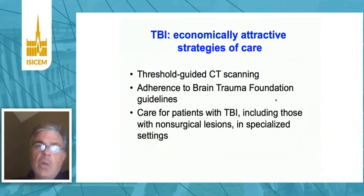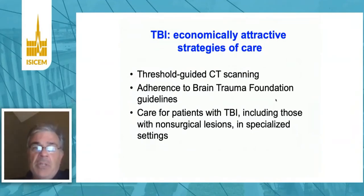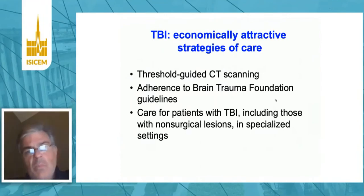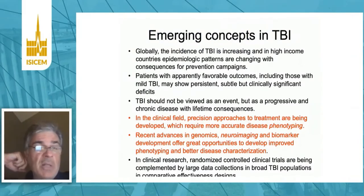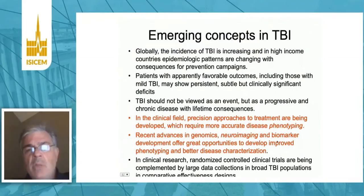There are no conflicts in this talk. In traumatic brain injury, there are a lot of strategies of care that have been used, and the three that are most economically attractive include threshold-guided CT scanning, adherence to clinical guidelines, and care of patients in specialized settings. There are several emergent concepts in traumatic brain injury management. When it comes to imaging, perhaps the most important, as you can see here highlighted in red, is disease phenotyping.